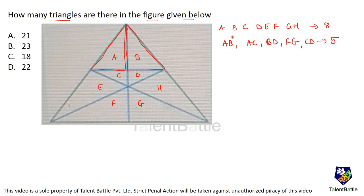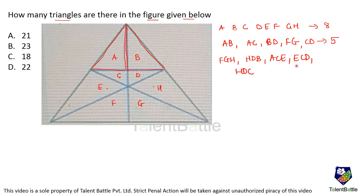Now combining three small triangles: F, G, and H gives one triangle. Then H, D, and B gives another. Then E, C, and A gives one. I can also combine E, C, and D, and also H, D, and C. These come out to be five more triangles. So we have 8 plus 5 plus 5 equaling 18 done so far, meaning 18 gets eliminated as an answer option.